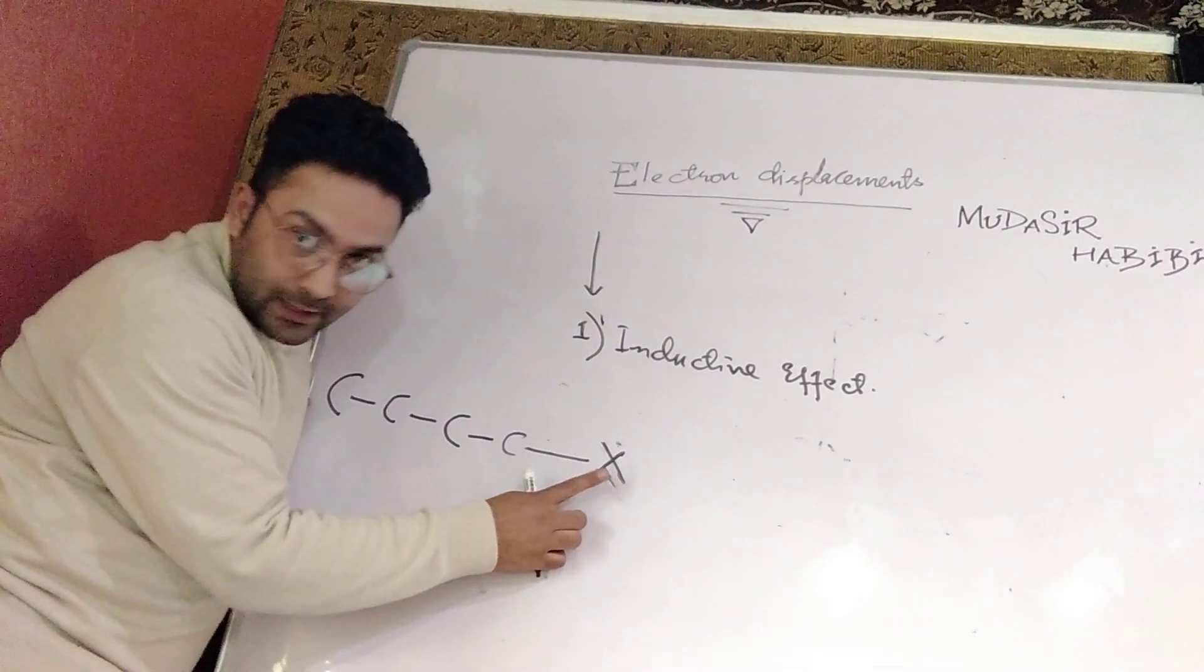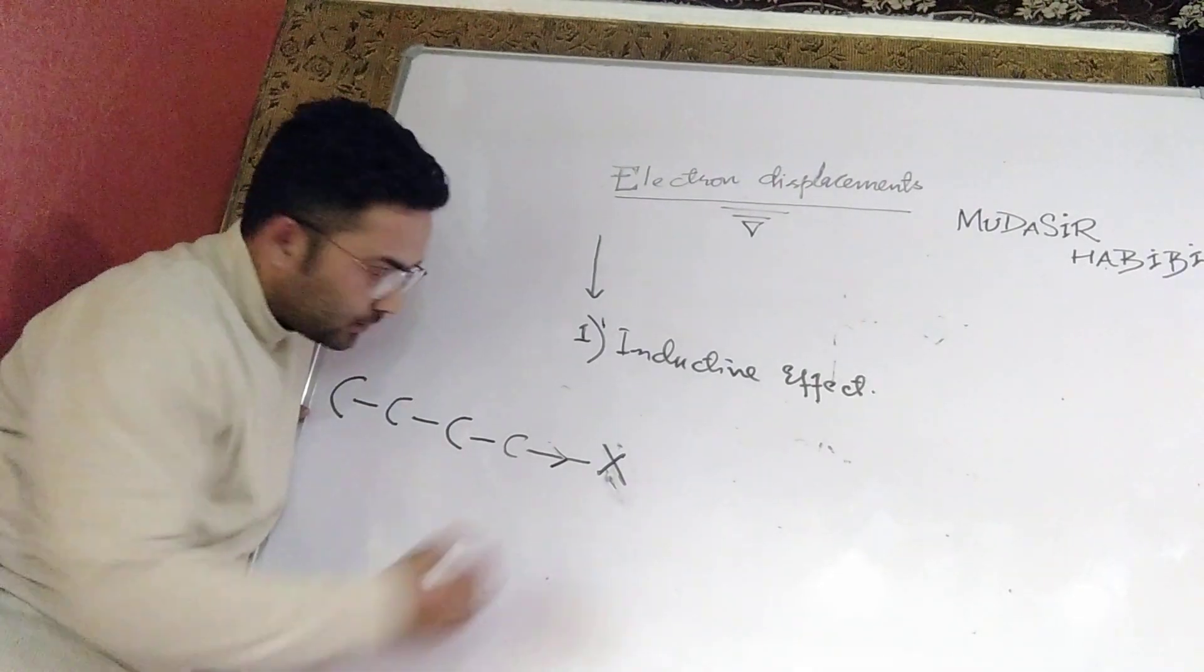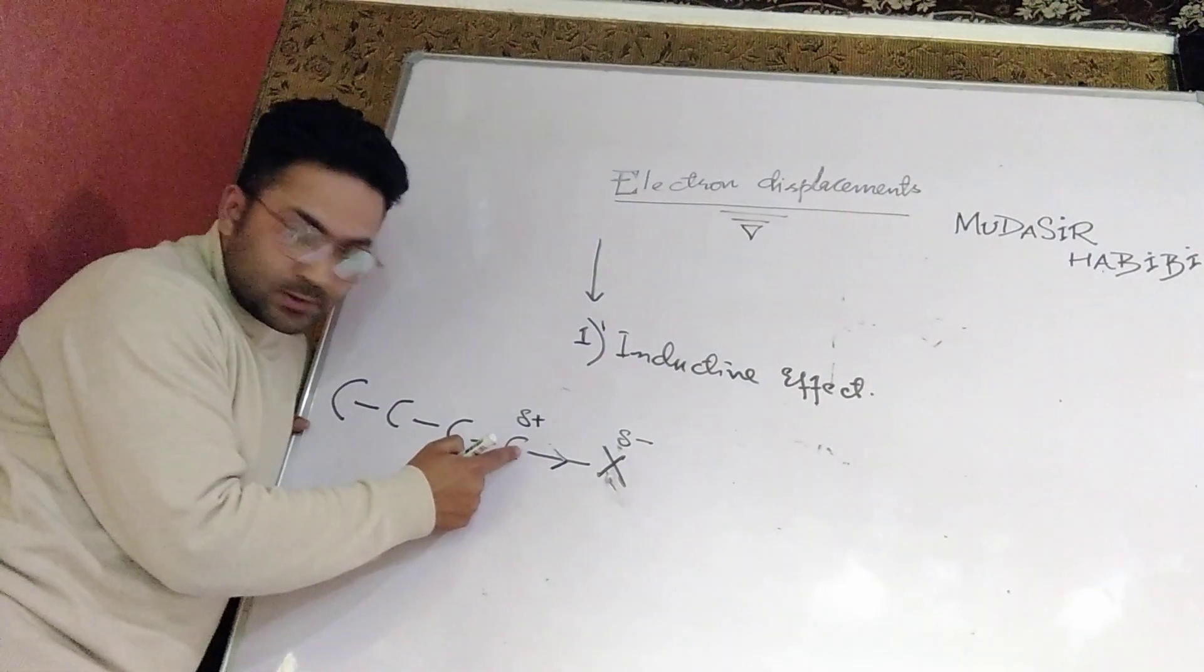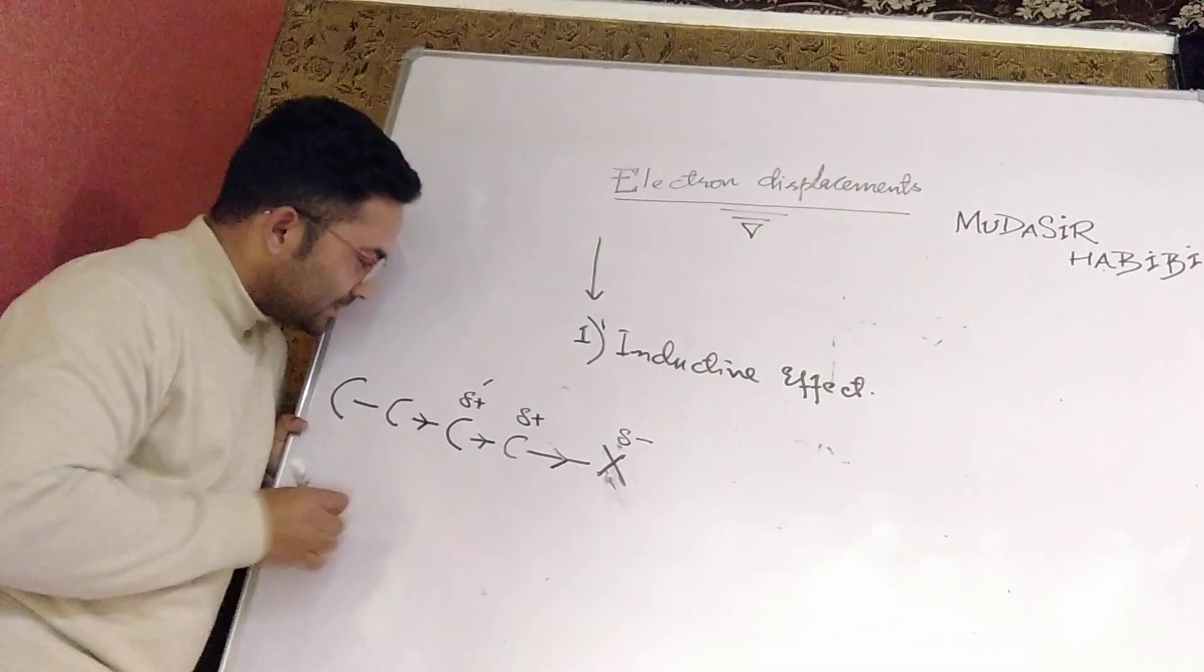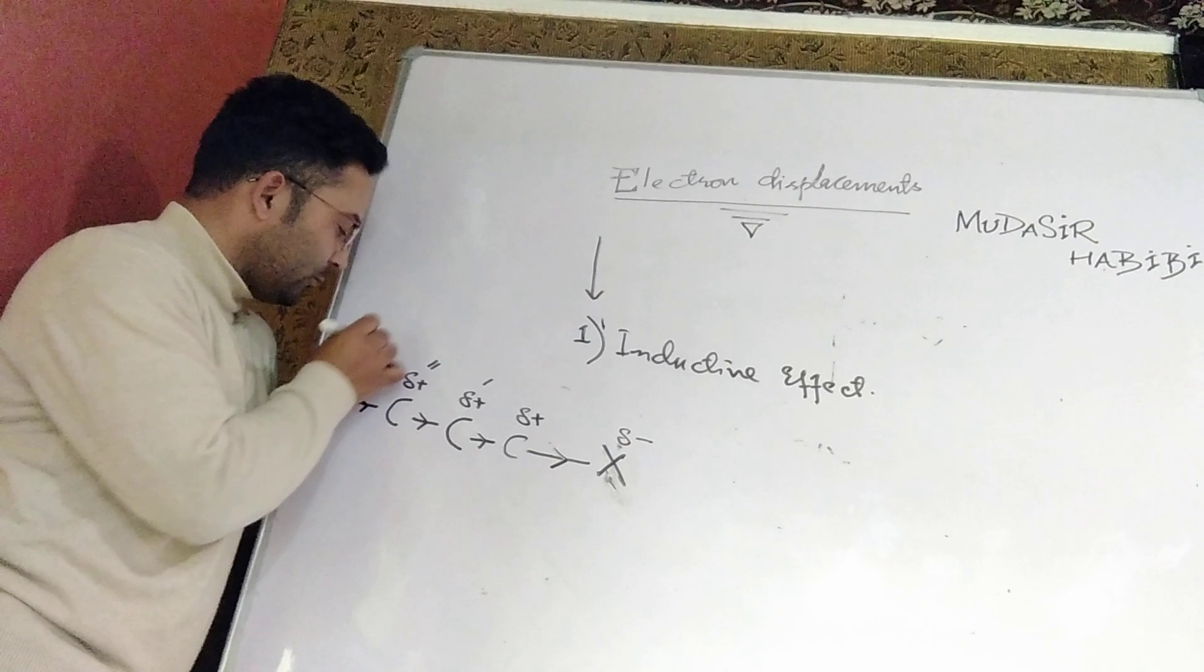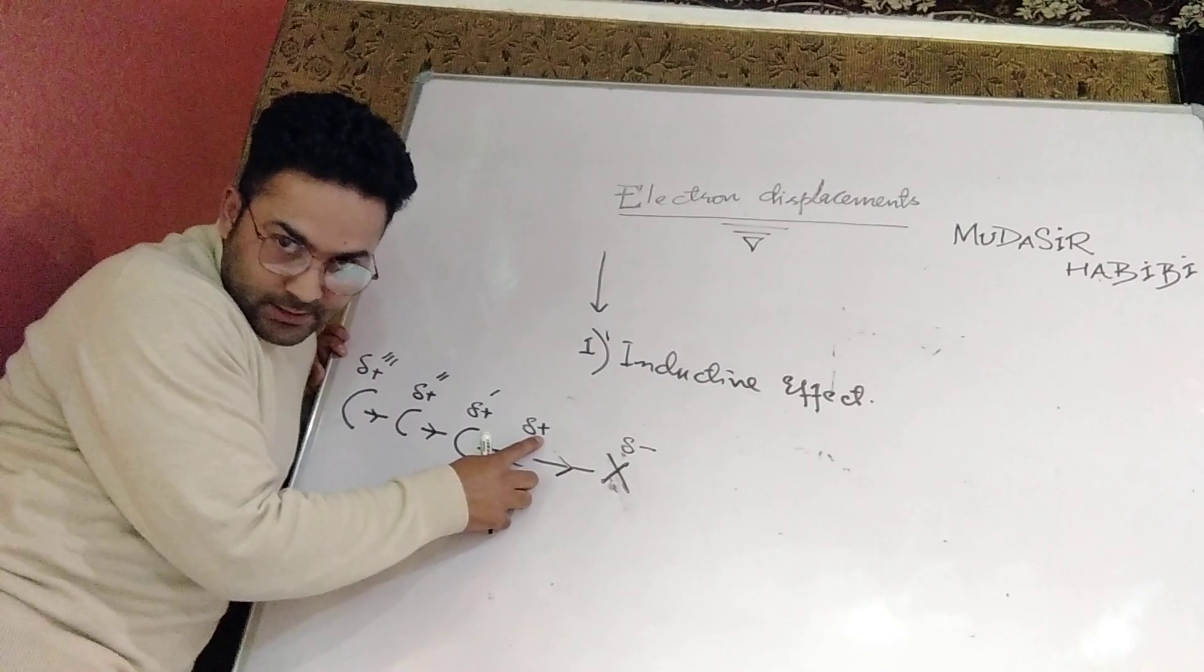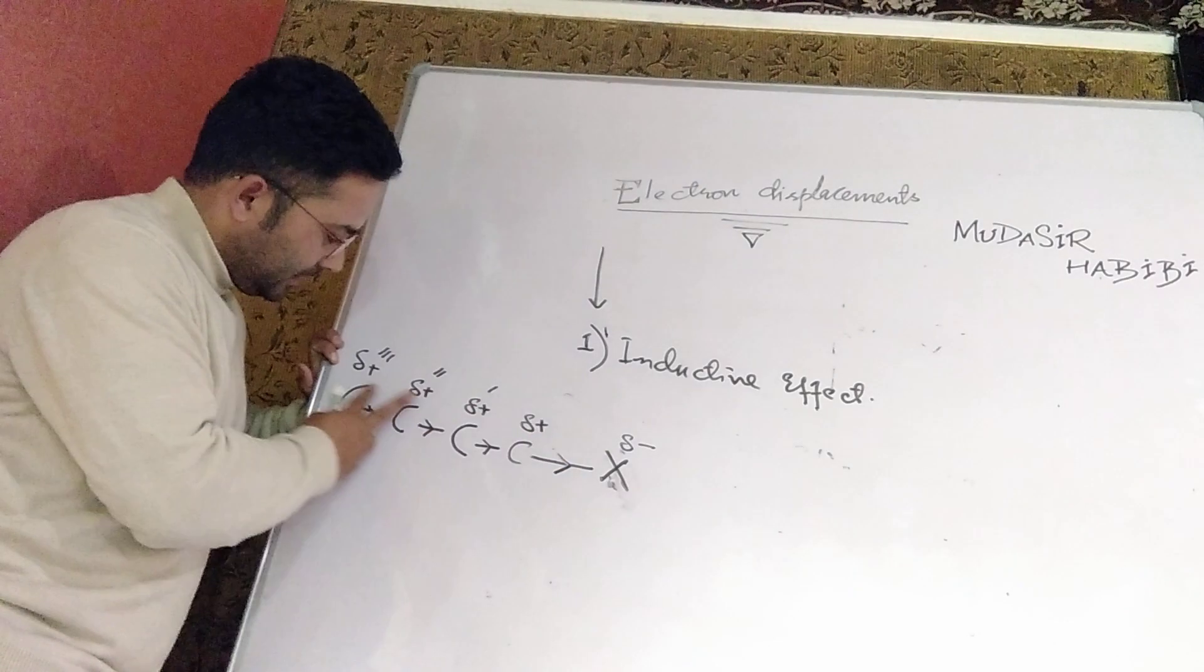If X is more electronegative, it will attract carbon's electrons towards itself. When it attracts electrons, slight negative charge develops on it, and obviously carbon has lost electrons, so slight positive charge comes on this carbon. Now electron deficiency is created here, so this carbon will withdraw electrons from the next carbon, so slight positive charge also appears there. Then likewise, this carbon will pull electrons from the next carbon, developing slight positive double dash. Likewise, this one will pull from the next, developing slight positive triple dash.